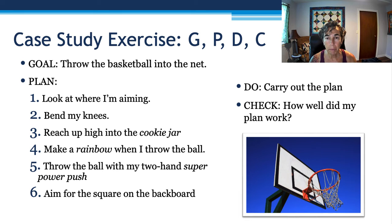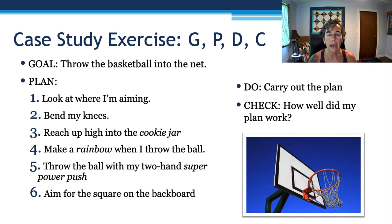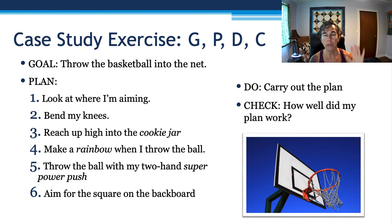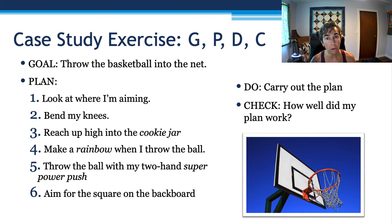Here's the GPDC applied to Mark's goal. Goal: throw the basketball into the net. Plan: I'm going to look where I'm aiming, bend my knees, reach high into the cookie jar, make a rainbow when I throw the ball — that's the arc of movement — and throw with two hands using a superpower push, which is kid-friendly language for force regulation. Aim for the square on the backboard. Then the last two steps: Do — carry out the plan — and Check: how well did my plan work? If it didn't work, how do I correct? That's the GPDC.